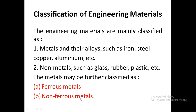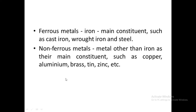Metals can be further classified as ferrous and non-ferrous metals. Ferrous metals are metals where iron is the main constituent, such as cast iron, wrought iron, and steel. Non-ferrous metals are metals where other metals are the main constituent other than iron, such as copper, aluminium, brass, and tin.